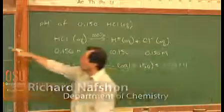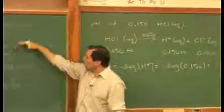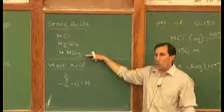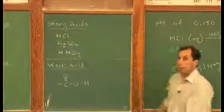On the center board here, I have a list of three strong acids: hydrochloric, sulfuric, and nitric, and all three of these are strong acids. We label them strong acids because they have something in common.